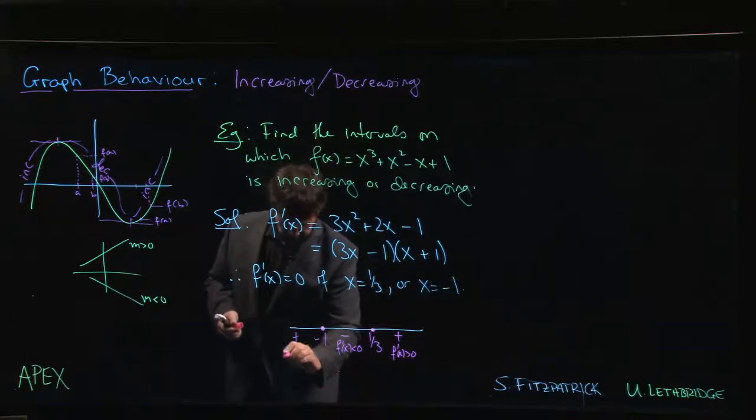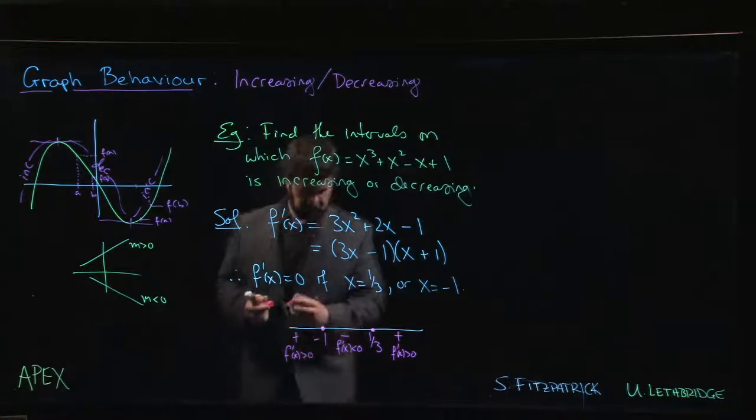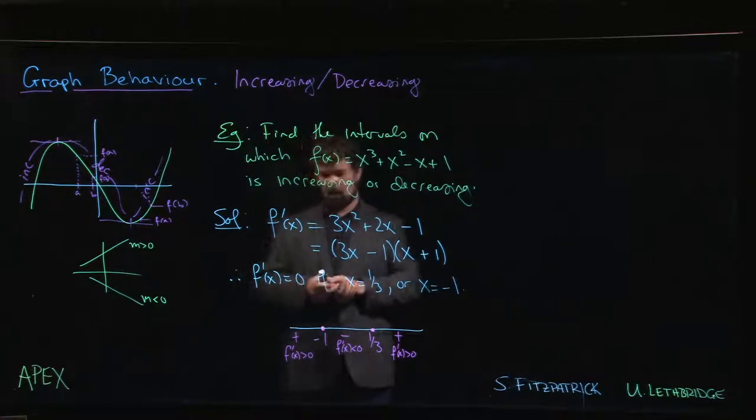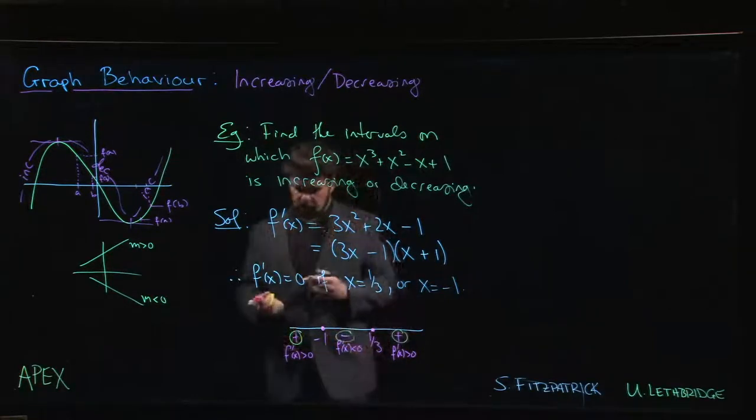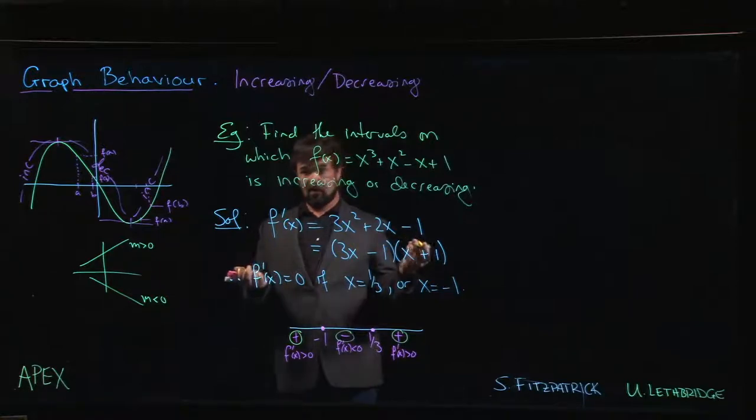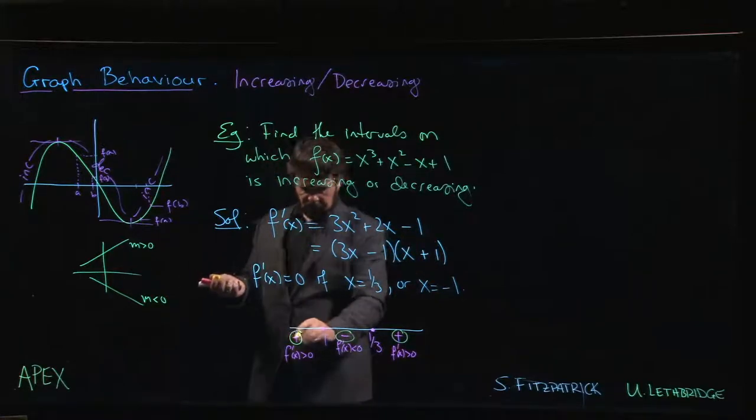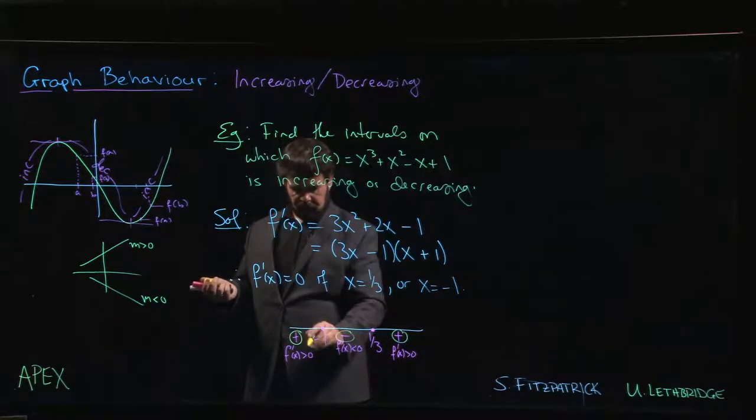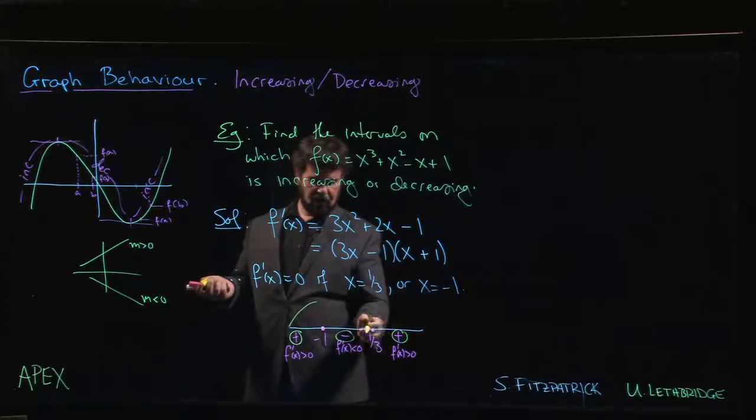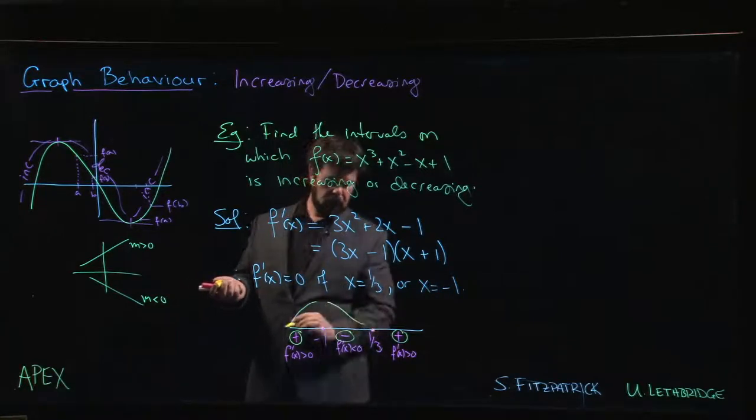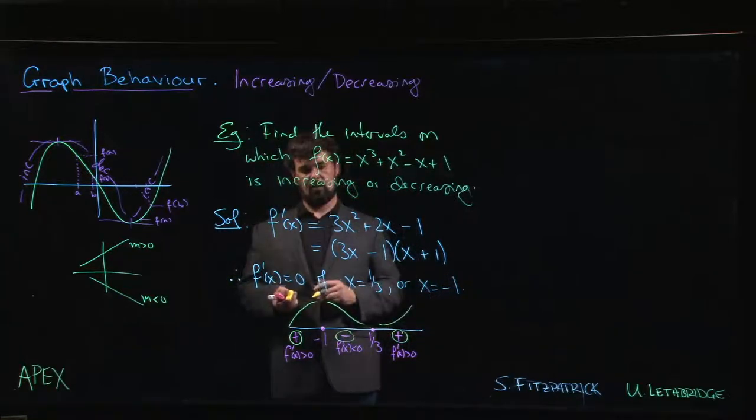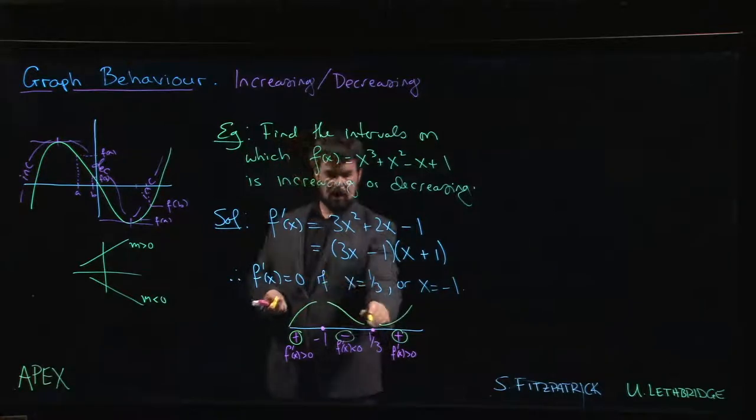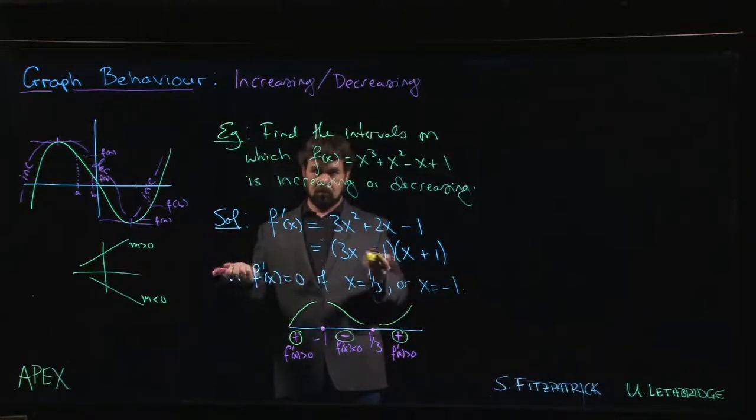So f'(x) > 0. You mark off those signs: positive, negative, positive. And you say, okay, I have this theorem we just did that says if f' is bigger than 0, if f' is positive, I have an increasing function. If f' is negative, I have a decreasing function. If f' is positive, I have an increasing function. So I know I'm going up, then down, and up again.